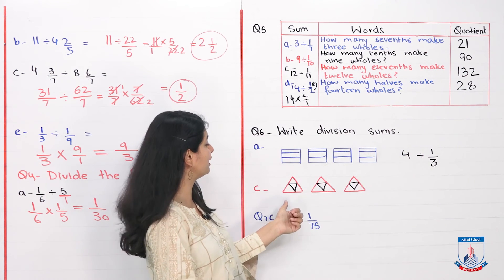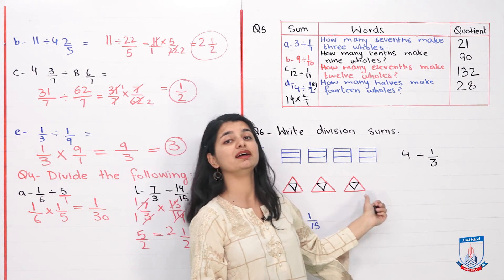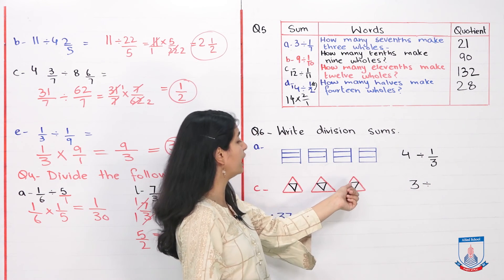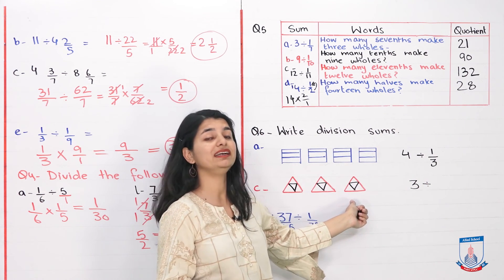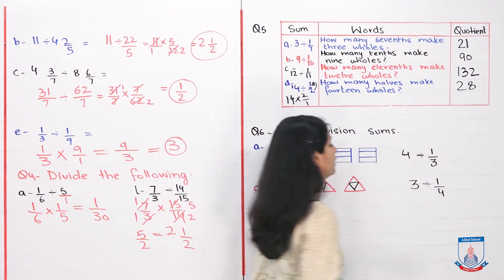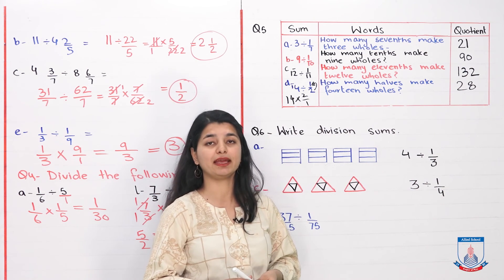Similarly, if we look at the next one, part B, you do yourself. Look at part C. How many triangles are there? 3. And each one is divided into how many parts? One, two, three, four. So one divided by four. The answer is three divided by one over four. This way you'll write the last one as well.